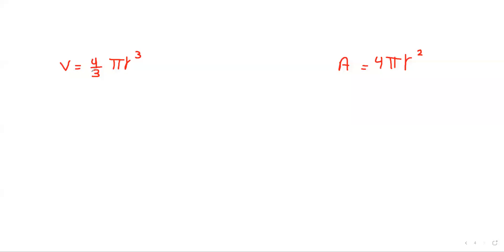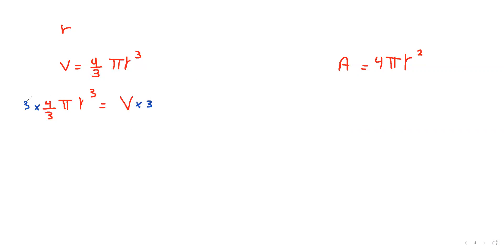The volume of a sphere is V equals 4 over 3 times pi times r cubed. We want to make r the subject. Switch sides to write 4 over 3 pi r cubed equals V. Multiply both sides by 3 to eliminate the fraction — cancel, giving 4 pi r cubed equals 3V.